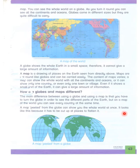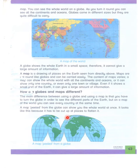A map peeled from the globe can show you the whole world at once. It looks the way it does because it has to be cut up at places to flatten it. اگر globe کے اوپر جو کاغذ چپکا ہوتا ہے اسے کاٹ کر flat بنا دیں تو اس طرح کا نظر آئے گا — کیونکہ بیچ میں سے کچھ pieces کاٹنے پڑتے ہیں۔ 'Peel' کا مطلب ہے چھیل کے اتارنا — اگر globe کے اوپر سے کاغذ کو آرام سے peel off کر لیں تو یہ اس طرح کا نظر آئے گا۔